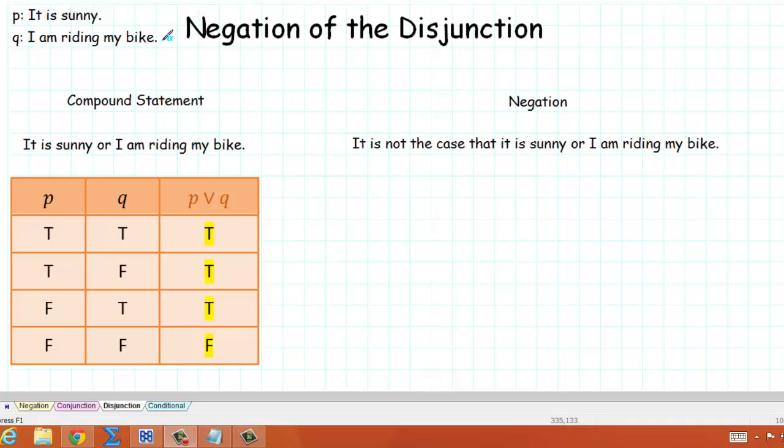First of all, what is the disjunction of those two simple statements? Well, it would be: it is sunny, or I am riding my bike.